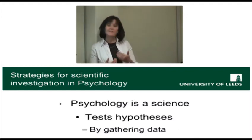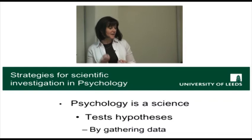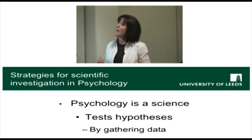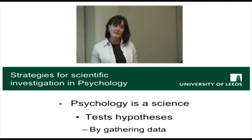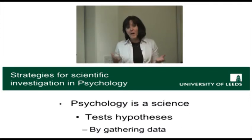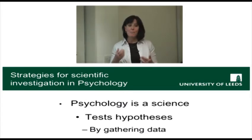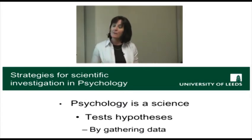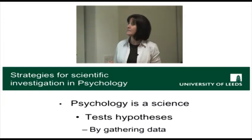Psychology, which is the science of human behaviour, uses certain strategies to investigate behaviour. Because we take a scientific approach and consider psychology to be a scientific study of behaviour, we want to start by formulating hypotheses — ideas, like for instance that androgens, the male hormones, might be linked to aggressive behaviour. Once we've formulated our hypothesis, we gather data to test it.